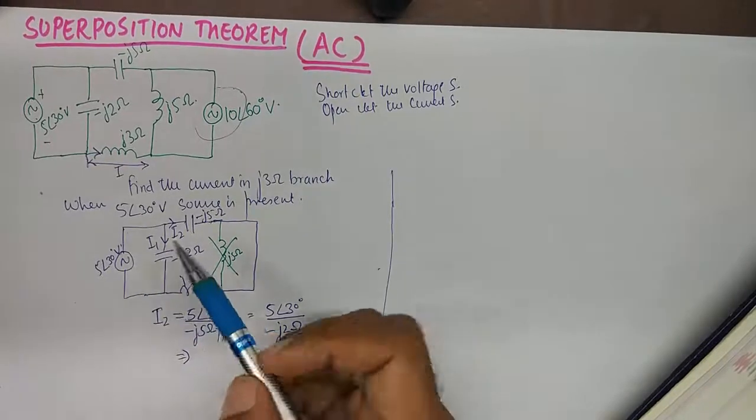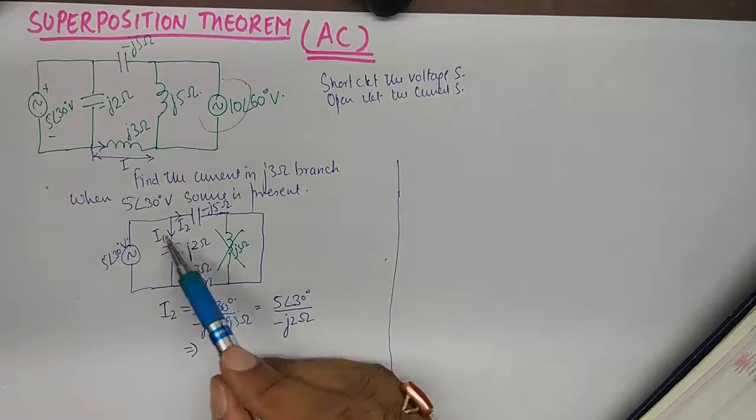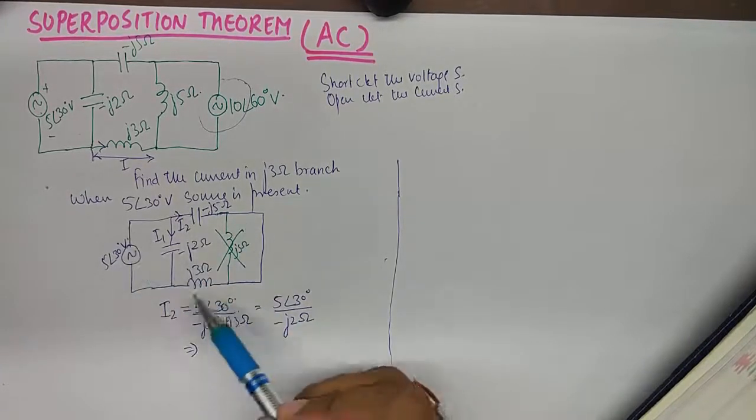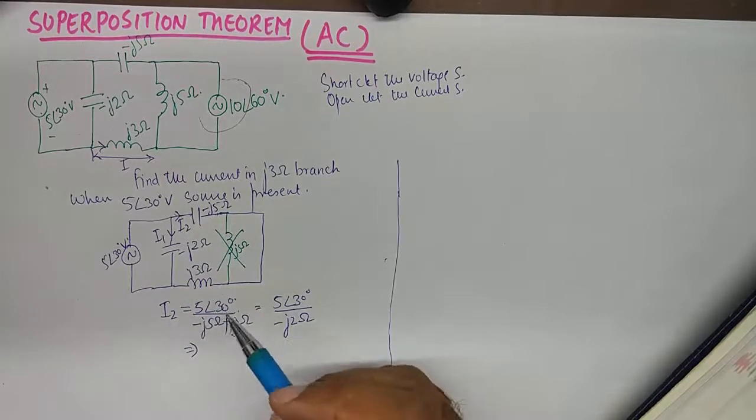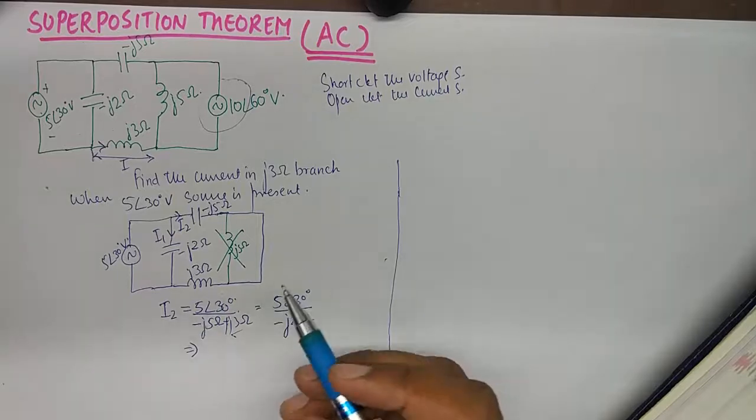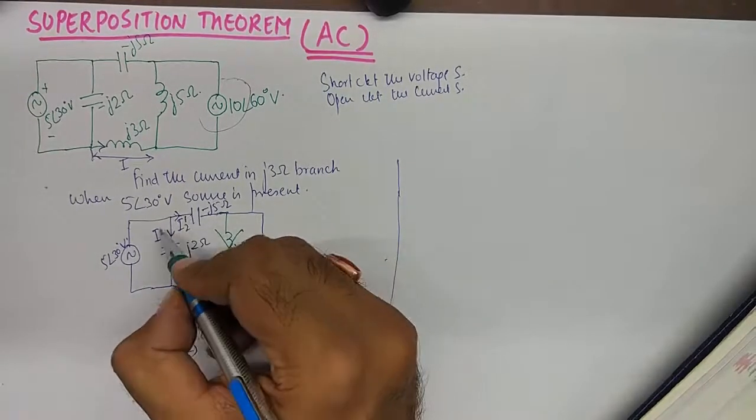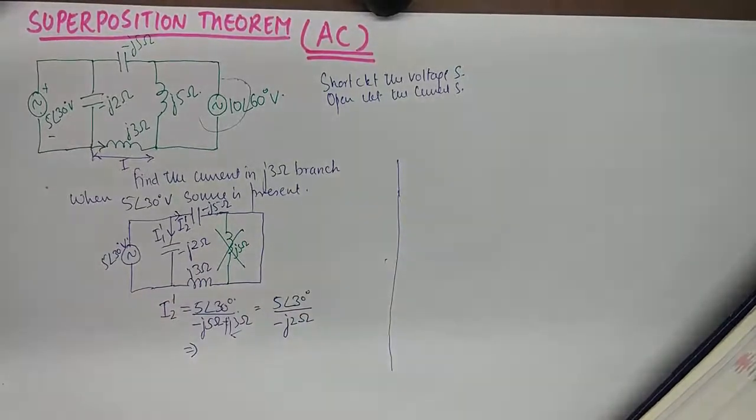So the current in this branch is pretty simple to find because the voltage across these two points is 5 angle 30 and total impedance is this. So voltage upon impedance is what the formula is to find I2. And I'll rather name it as I2 dash, I1 dash and I2 dash because we'll find I2 double dash in the other case.